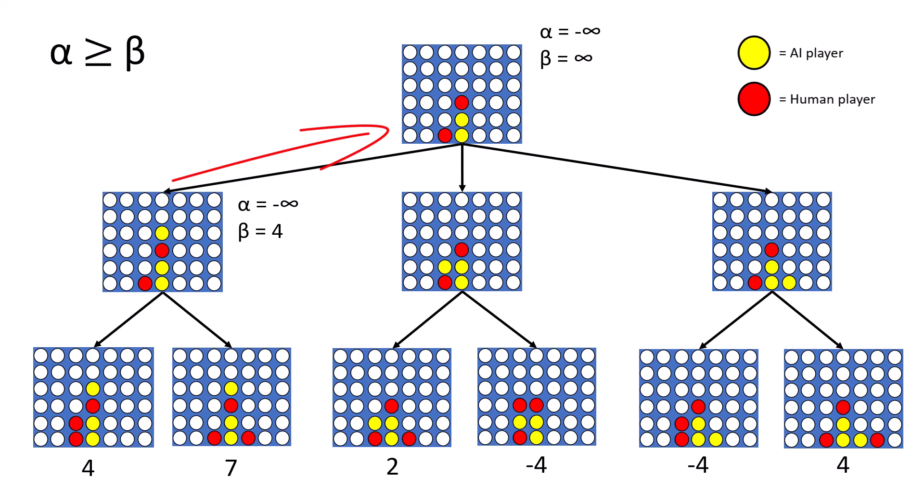We then go back up to the tree, and at this level, it is the AI player or maximizing player's turn, meaning that the alpha value would change. Right now, it has a choice between negative infinity and 4. Of course, 4 is larger than negative infinity, so the alpha value would change to 4.